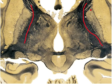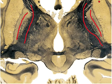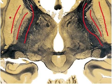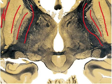We have the globus pallidus, part of the basal ganglia. And then we have the putamen right here. It's a little difficult to see, but we have the external capsule, the claustrum, and then the extreme capsule right there.